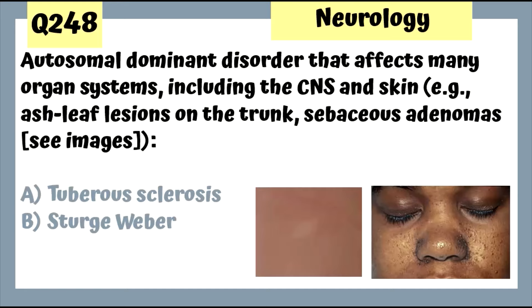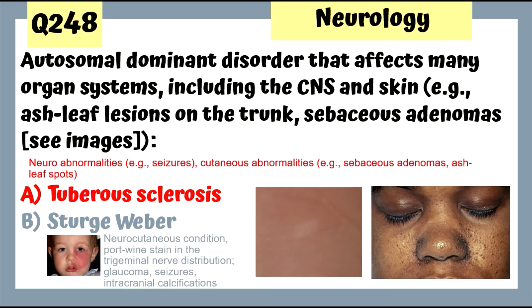Question 248: An autosomal dominant disorder affecting many organ systems including the CNS and skin — ash-leaf lesions on the trunk and sebaceous adenomas — is tuberous sclerosis. Sturge-Weber is another neurocutaneous condition presenting with a port wine stain in the trigeminal nerve distribution and can lead to glaucoma, seizures, and intracranial calcifications.